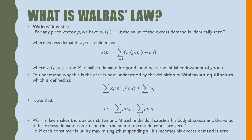To understand why this is the case, it is best to understand the definition of Walrasian equilibrium, being defined as the summation of all Marshallian demands for good i is less than or equal to the initial endowments of good i. Note that our budget set is equal to the prices of good i times good x for all good i, which is also equal to the prices of good i times endowment of good i. So this is just a reshuffling of our budget set — they're the same quantities. Walras's Law makes the obvious statement: if each individual satisfies his budget constraint, the value of his excess demand is zero, thus the sum of the excess demands are zero. That is, if each consumer is utility maximizing, thus spending all his income, his excess demand should be zero.